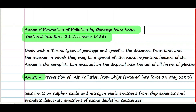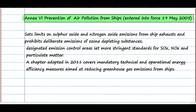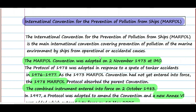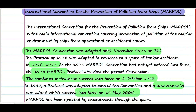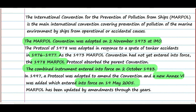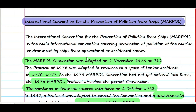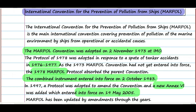Annex 6 is the prevention of air pollution from ships, which entered into force on 19th May 2005. If you want these notes, you can join the Telegram channel — the link is in the description. I will make a separate video for each annex with full details, all the certificates, and all other required documents. Please do like the video and subscribe to the channel. Until then, see ya.